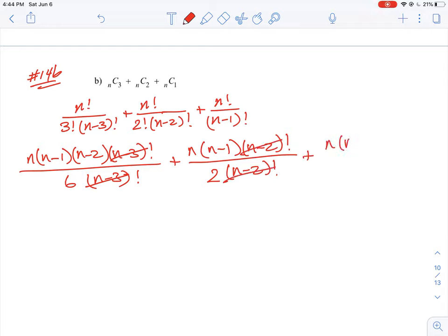And then the last one here is n times n minus 1 factorial all over n minus 1 factorial, and that eliminates those terms.